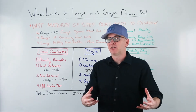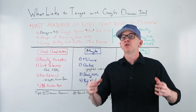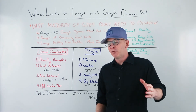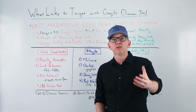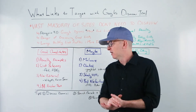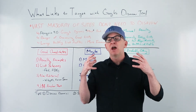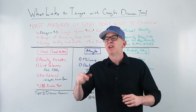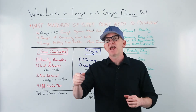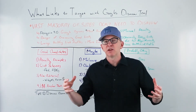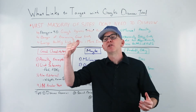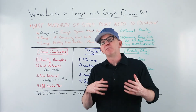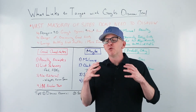Where do you find your links to disavow? First choice is generally Search Console — the link report — because those are the links Google is actually using. It is also helpful to use third-party tools such as Moz Link Explorer, Ahrefs, SEMrush, or whatever your link index is, because you can sort through the anchor text. Google's link report doesn't include anchor text, so using those anchor text reports helps you find over-optimized or spammy anchor text, spot patterns, and sort effectively.